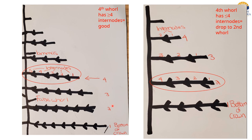Here we have two examples. In the first example, we have a free-growing age tree and we count from the bottom up — this is the bottom of the crown. So this is one whorl, two whorls. This is a false whorl, so we don't count it. Three whorls, four. Then we check if there are at least four internodes: one, two, three, four, five — it has at least four internodes. So we're going to select a branch from this whorl — you can select this branch right here.